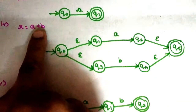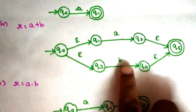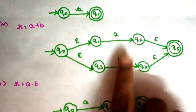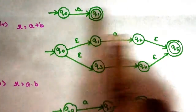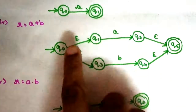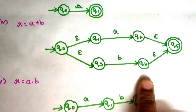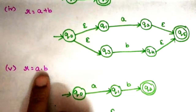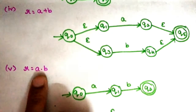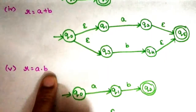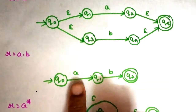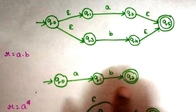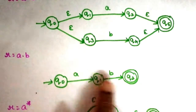If you look at the union operations — A plus B — you combine these two strings with a state. For concatenation, R equal to A dot B means A multiplication of B. That is the structure for concatenation.